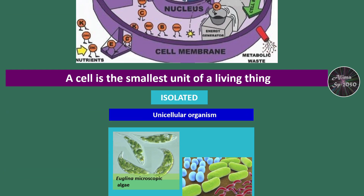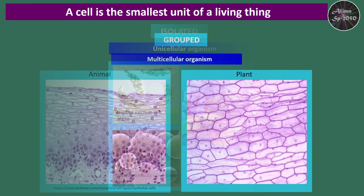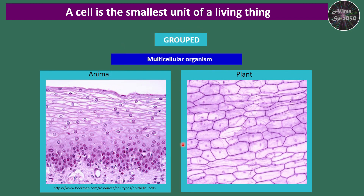A cell is the smallest unit of living things. It can be isolated, and one cell can form a unicellular organism — for example, animal and plant tissues that are formed by several cells.